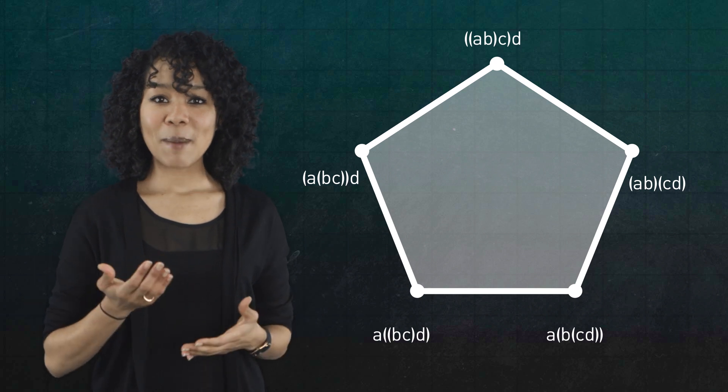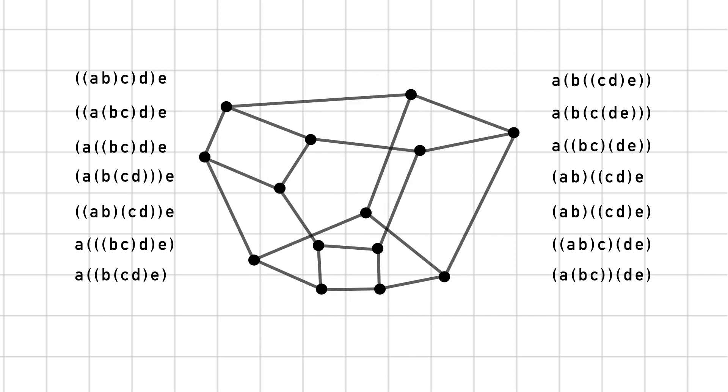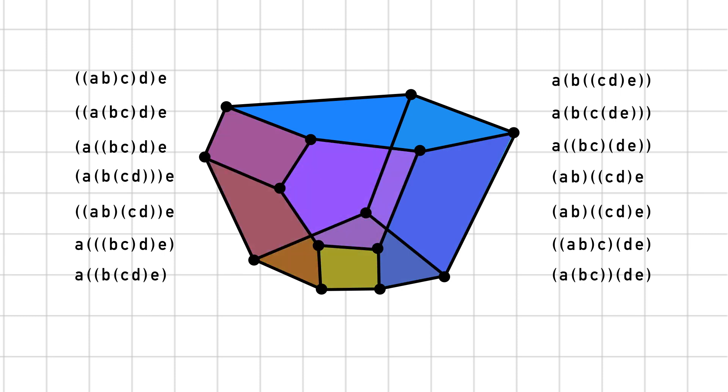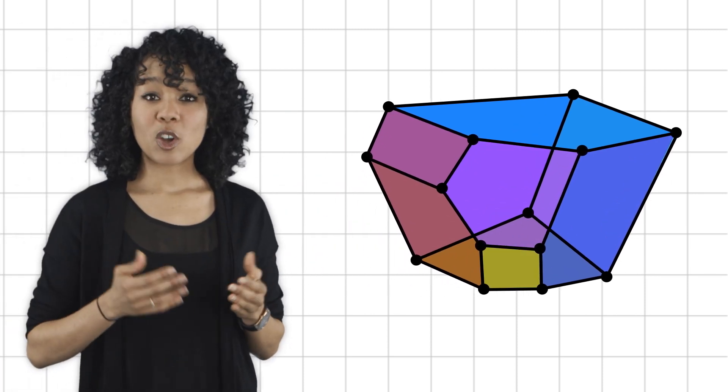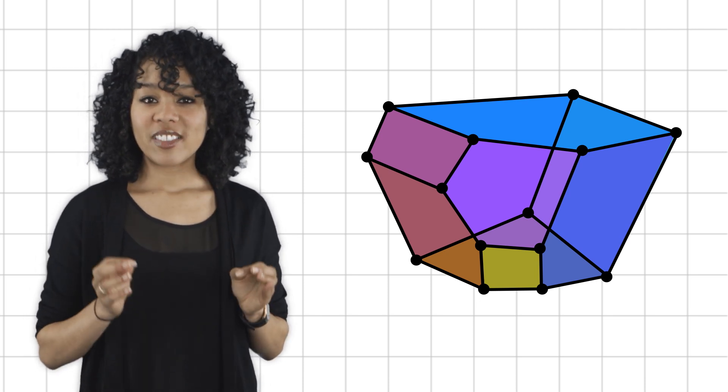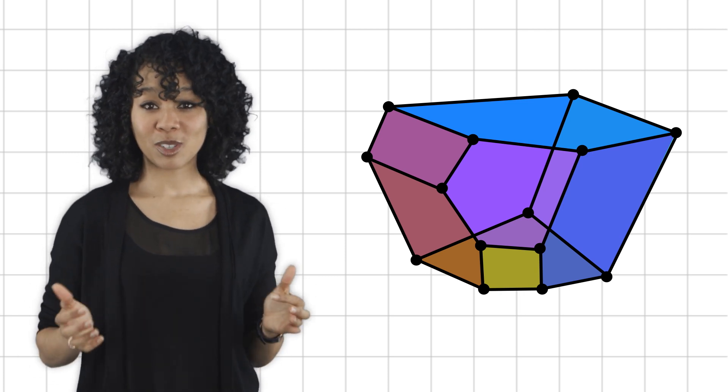But why stop at four? What happens if you multiply five loops? Well, there are 14 ways to put parentheses on five letters, so you end up with a polygon that has 14 vertices, 21 edges, 9 faces, some of which are pentagons and some are rectangles, and one solid interior. The edges represent homotopies between the loops. The faces represent homotopies between those homotopies. And the solid interior represents a homotopy between the homotopies, between the homotopies.